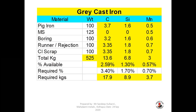Now we have to add the percentage required in the bath. We require 3.4% of carbon, 1.7% of silicon and 0.7% of manganese as the bath composition. So what we require is 17.9 kg of carbon — that is 525 kg × 3.4% = 17.9 kg. Similarly, 8.9 kg of silicon and 3.7 kg of manganese are required.